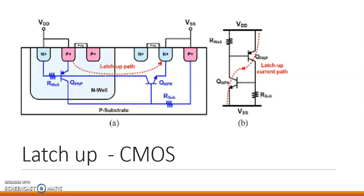The next very important point is the latch-up problem. The latch-up problem is that some parasitic transistors are formed in a CMOS due to the fabrication process — we are not intentionally forming these transistors, but they are parasitic. This P, this N, and this P-substrate form one transistor, and then the well, the substrate, and this N-region form another transistor. There is also R-sub and R-well, which are the resistances of the well and the substrate.